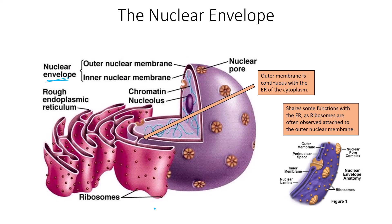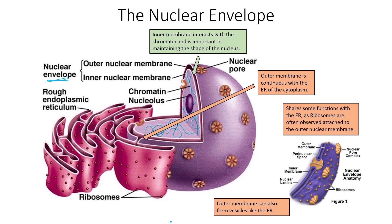The nucleus shares some functions with the ER, as ribosomes are often observed attached to the outer nuclear membrane. In addition to the rough ER's membrane being studded with ribosomes, you would actually see the outer membrane of the nuclear envelope studded with ribosomes as well — it is in fact the exact same membrane that surrounds not only the nucleus but creates the rough endoplasmic reticulum. The outer membrane can also form vesicles, just like the ER. The inner membrane interacts with the chromatin and is important in maintaining the shape of the nucleus, while the outer nuclear envelope is continuous with the rough ER and provides an extra layer of protection for the inner components.